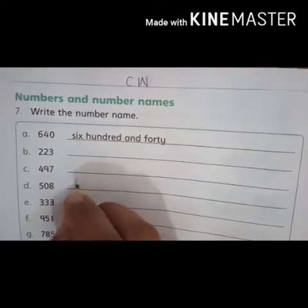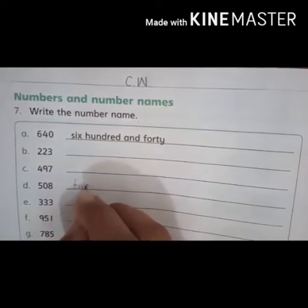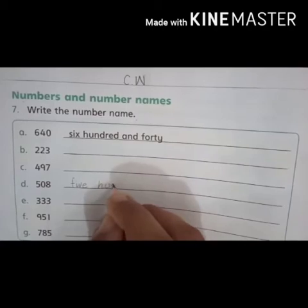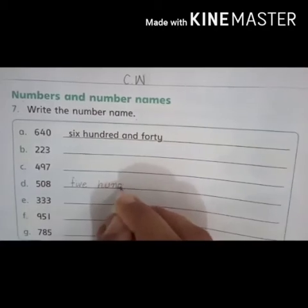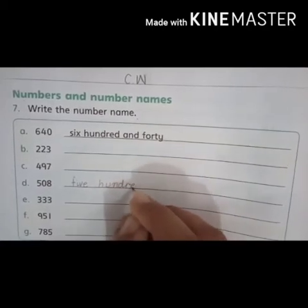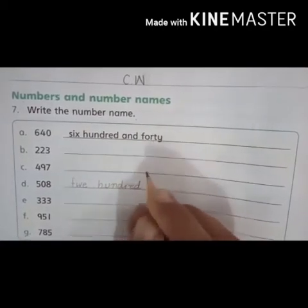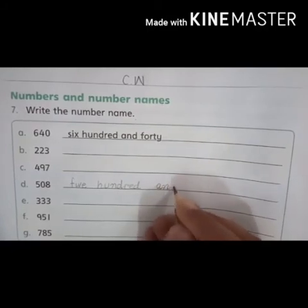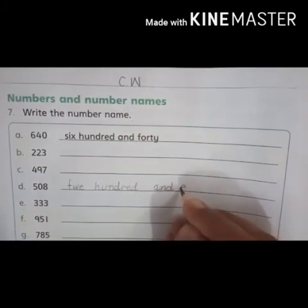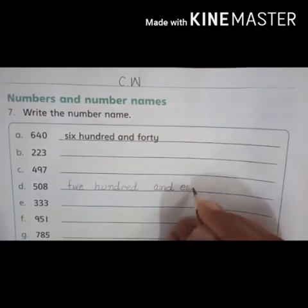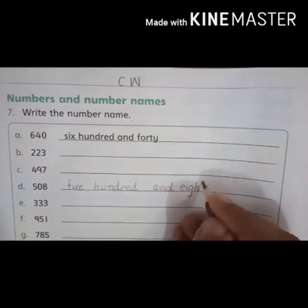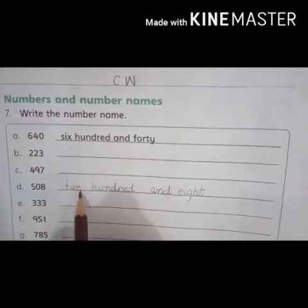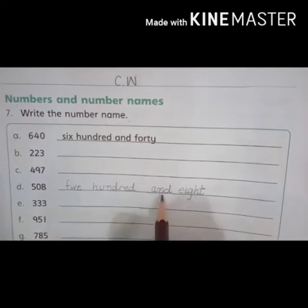Five zero eight — five hundred and eight. The spelling is F-I-V-E H-U-N-D-R-E-D and E-I-G-H-T. Number ka naam kya hai? Five hundred and eight.